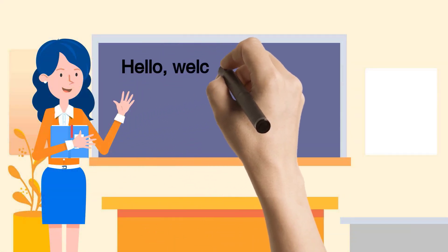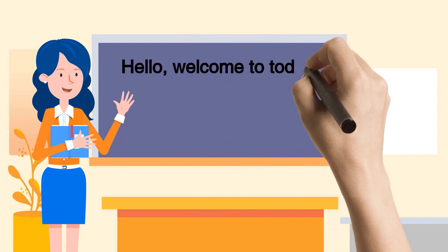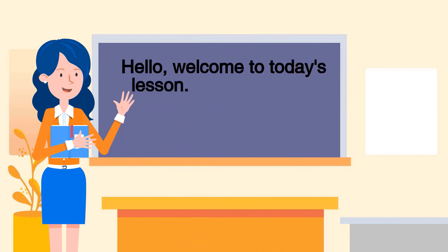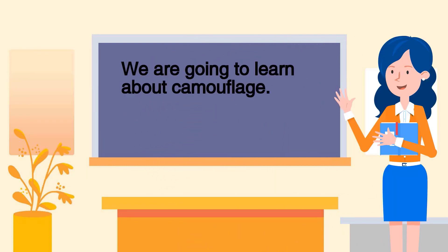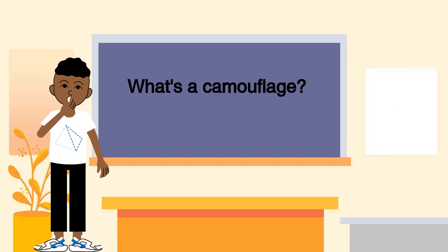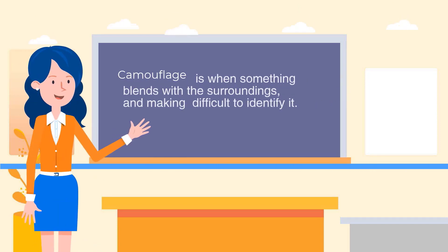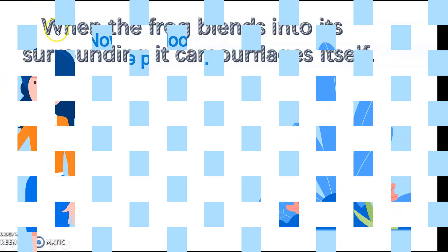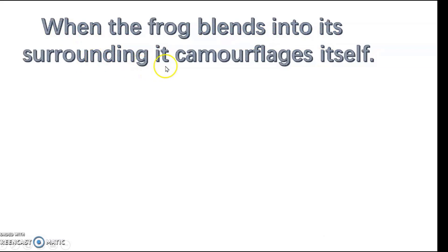Hello, welcome to today's lesson. We are going to learn about camouflage. What's camouflage? Camouflage is when something blends with its surroundings, making it difficult to identify. When the frog blends into its surroundings, it camouflages itself.